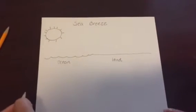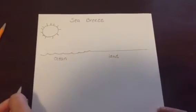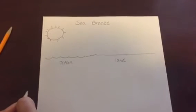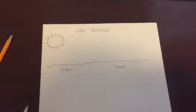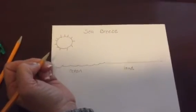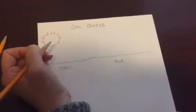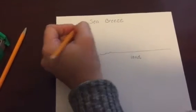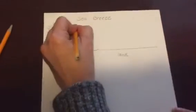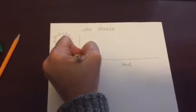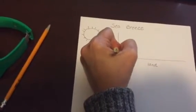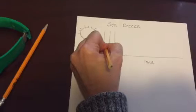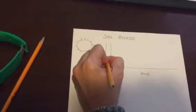Now in the daytime, the ocean maintains its temperature and stays approximately the same temperature it was at night. So during the daytime, you're going to have cooler temperatures over the ocean, and when you have cooler temperatures, that means that molecules in the air are going to get close together and they're going to sink.